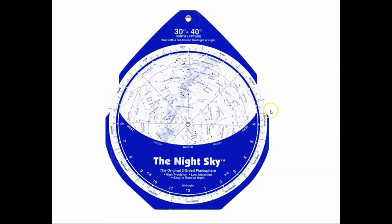But these planispheres are flat maps, oftentimes able to rotate with this dial here and be able to see time of year, month and time of night and see what stars are up. So it's a map of the night sky.